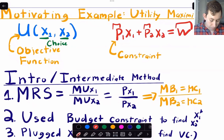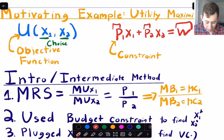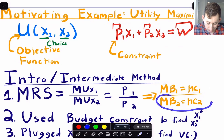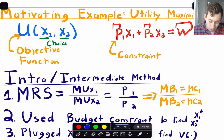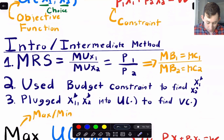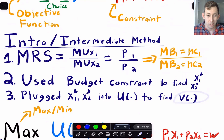In intermediate micro, you set the MRS equal to the ratio of prices — the marginal rate of substitution is the marginal utility of good one over the marginal utility of good two, set equal to p1/p2. You were really saying that the marginal benefit must equal the marginal cost for each good — essentially two first order conditions. Then you used the budget constraint to find x1* and x2*, and plugged those into the utility function to get the value function v(p1, p2, w), expressed purely in terms of parameters.